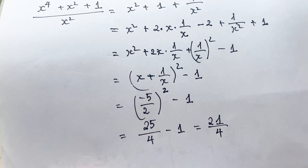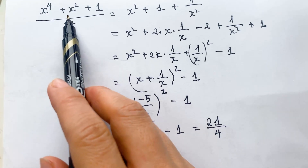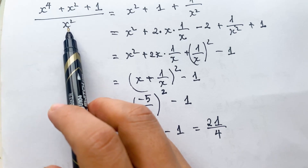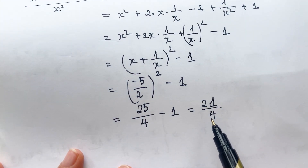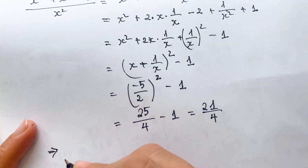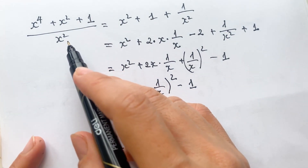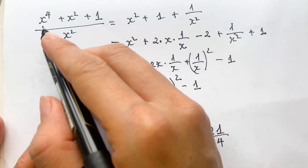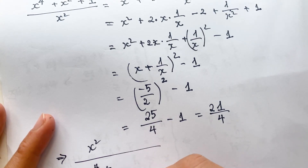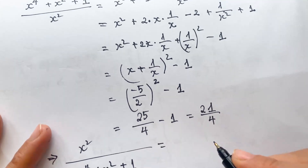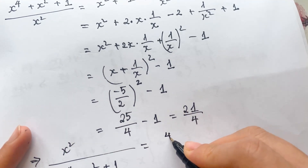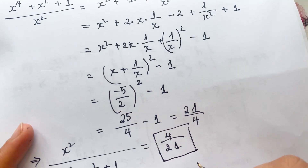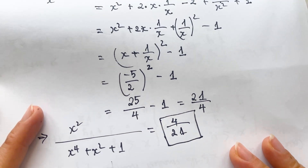And everyone can see that x to the power 4 plus x squared plus 1 over x squared equals 21 over 4. Therefore the reverse, x squared over x to the power 4 plus x squared plus 1, equals 4 over 21. That is the value we needed to find.